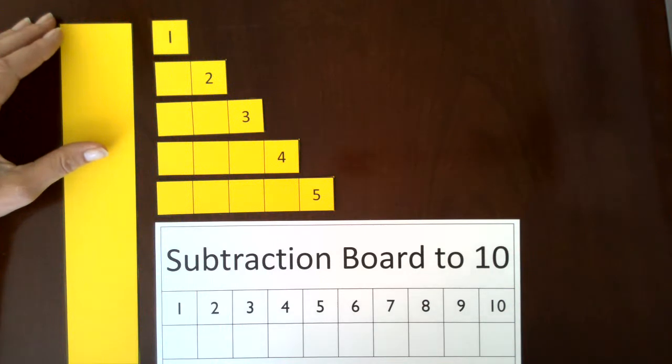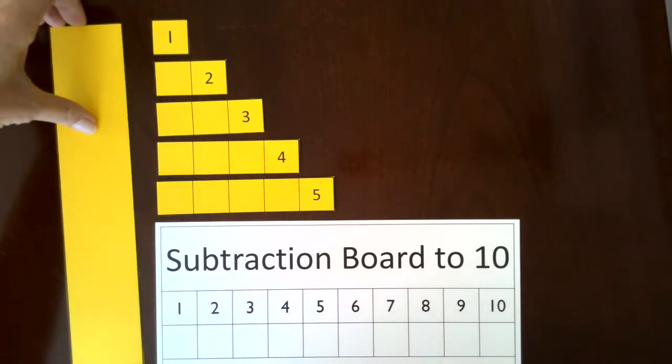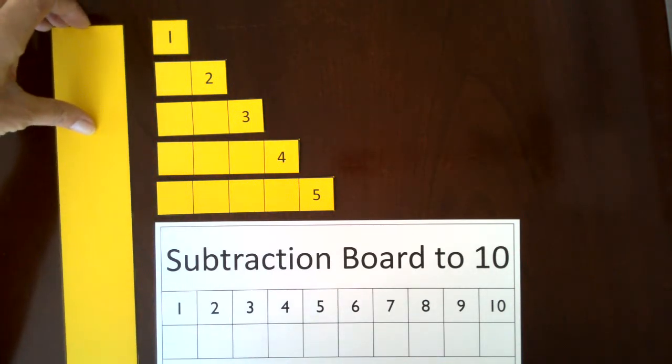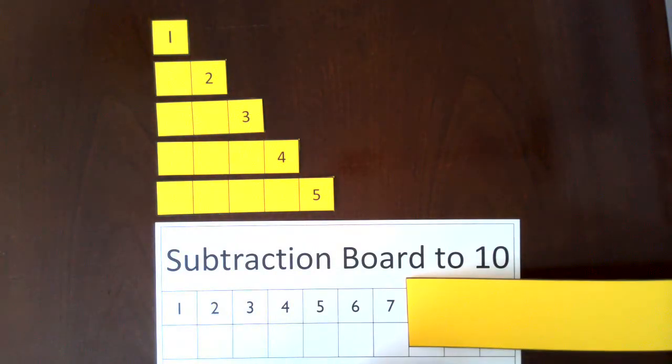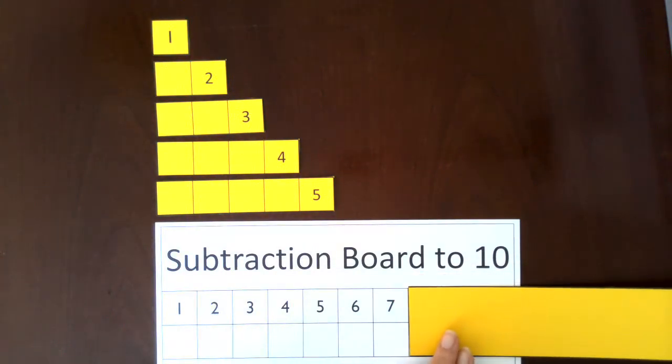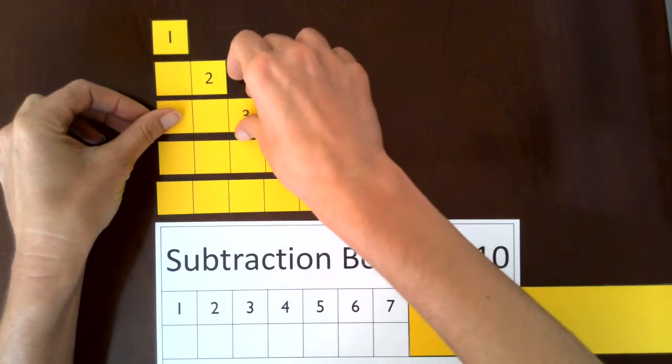Let's start with a problem such as 7 minus 3. The first step is to cover everything after 7. So we have 7 and we're going to take away 3. We take the 3 ruler and cover 7.